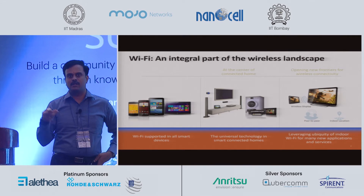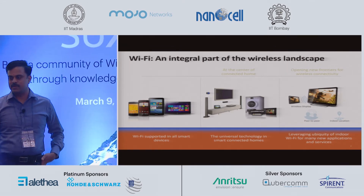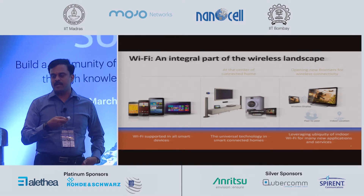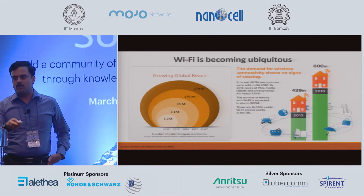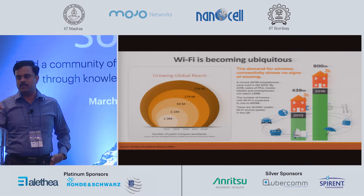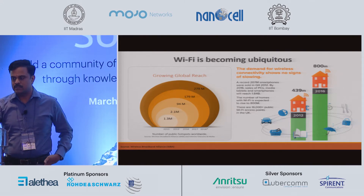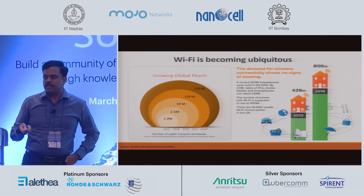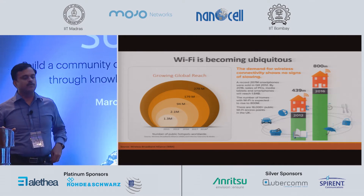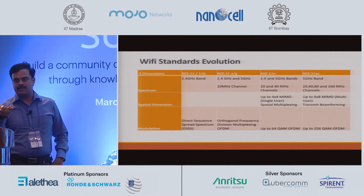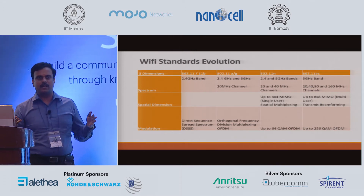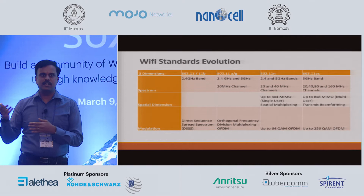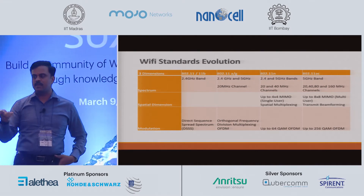We need Wi-Fi here in this hall to connect and keep track of what we are doing. So it is everywhere — it is penetrating into the home, into the enterprise world, and it is becoming very dense. You can see how global reach for Wi-Fi is growing: between 2011 to 2018 there is like a 200x fold improvement in terms of how Wi-Fi is being used. Wi-Fi standards have evolved in three dimensions: spectrum, spatial, and modulation — and I think the audience here is probably well aware of these things.